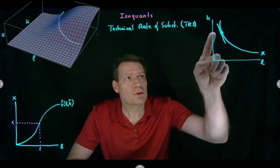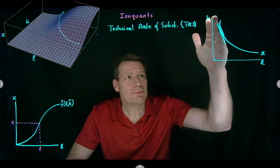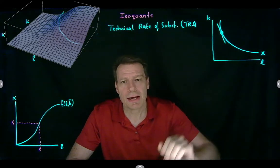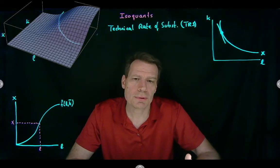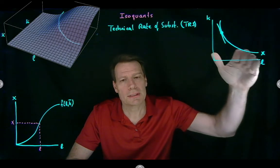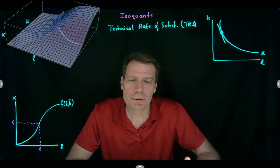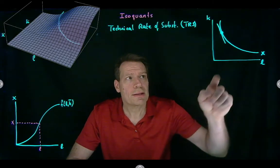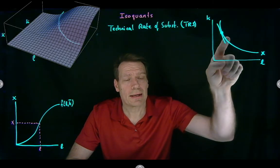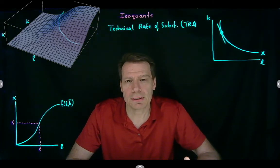Second, we can talk about the shapes of these isoquants. Remember that for consumers, when indifference curves looked more like straight lines, we said there was a high degree of substitutability. Exactly the same thing is true here. When we have relatively flat isoquants, it means that capital and labor are relatively substitutable in production. If, on the other hand, the isoquants are more like L-shapes — more like the shapes of perfect complements — then we would say that capital and labor are relatively complementary in production.